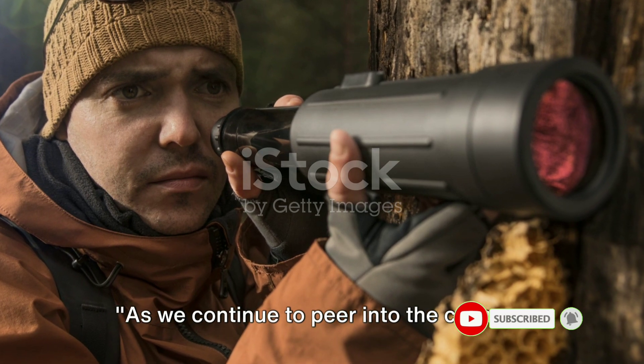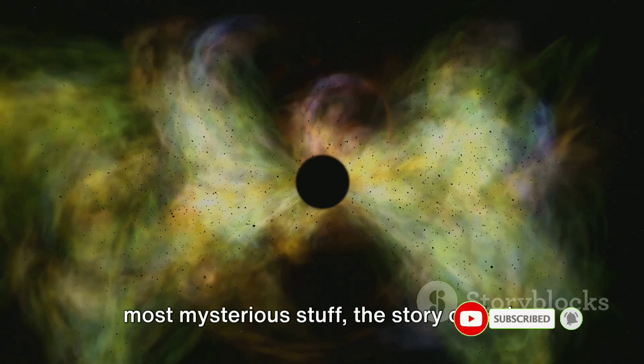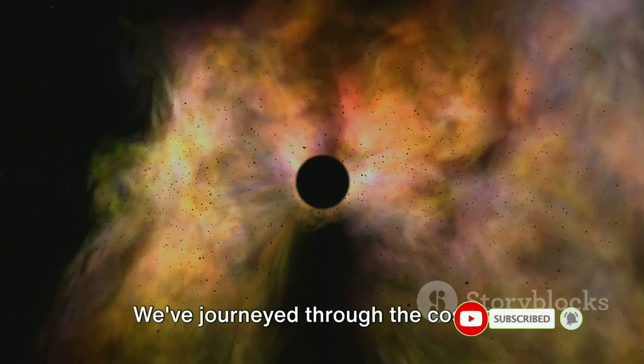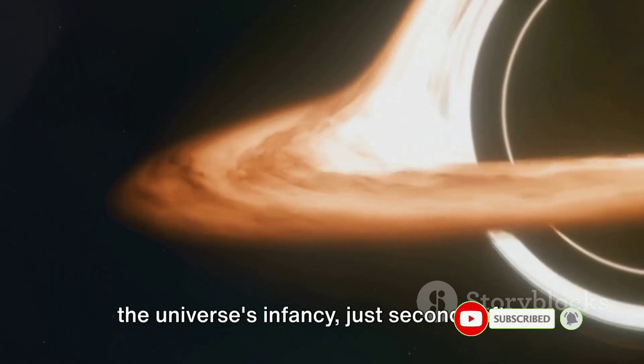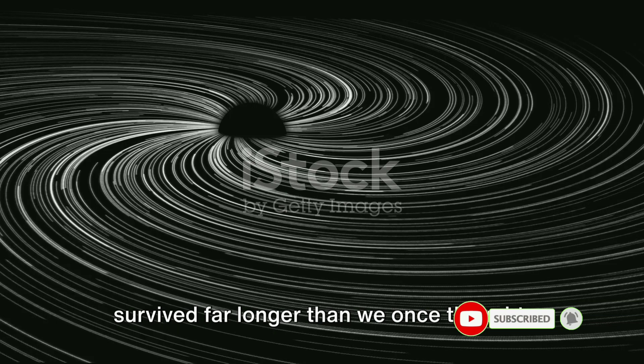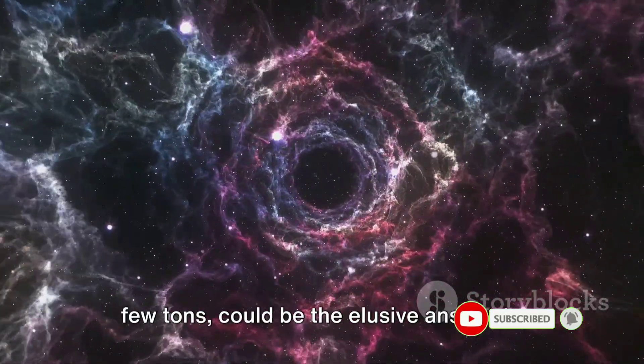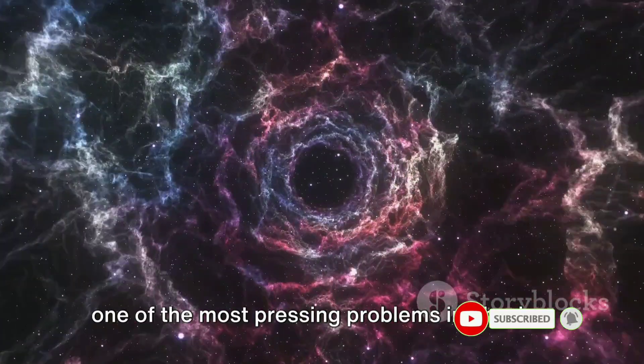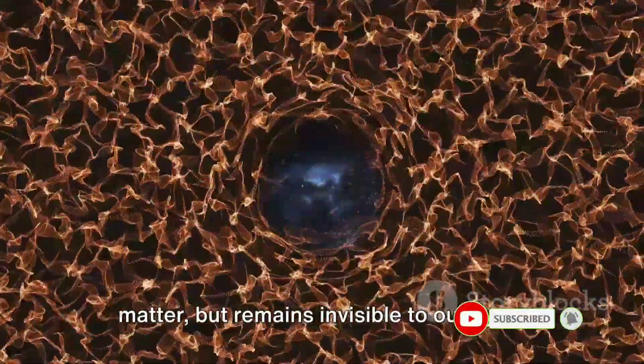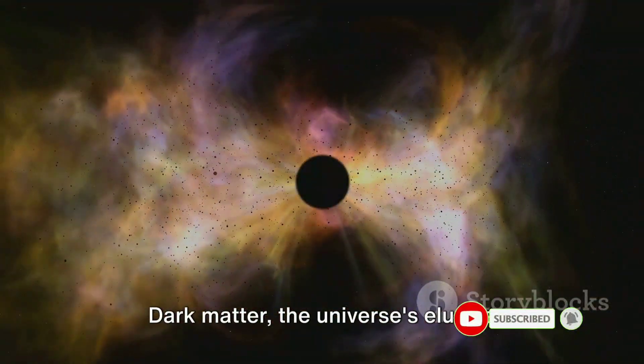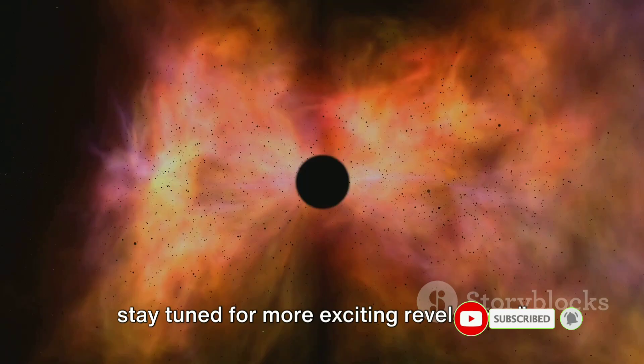As we continue to peer into the cosmos, the role of tiny black holes in our search for dark matter becomes increasingly intriguing. As we delve deeper into the universe's most mysterious stuff, the story of dark matter gets even more fascinating. We've journeyed through the cosmos, uncovering the potential of tiny cosmic suspects, primordial black holes, born in the universe's infancy, just seconds after the Big Bang. No larger than a proton, they may have survived far longer than we once thought, clustering together in the shadows. These miniature black holes, weighing less than a small asteroid yet more than a few tons, could be the elusive answer to one of the most pressing problems in physics. They may be the unseen majority, the dark matter that makes up an estimated 85% of the universe's matter, but remains invisible to our eyes. Dark matter, the universe's elusive enigma, might just have its roots in the tiniest of black holes. As we continue our cosmic investigation, stay tuned for more exciting revelations.